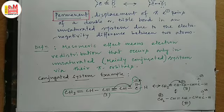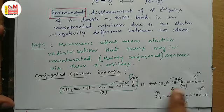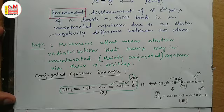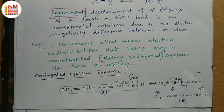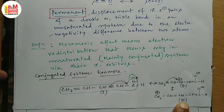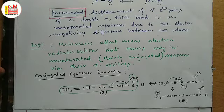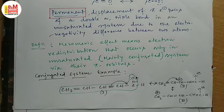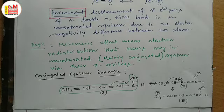Now what is the difference between mesomeric effect and resonance? Here we have drawn the canonical structures of this molecule, which is what we always do in resonance. But in this case we are mainly considering the permanent displacement of pi electron pairs in the individual structure of the molecule. In the case of resonance, we actually deal with the delocalization of pi electrons within the whole system. In resonance we consider the structure of a resonance hybrid which actually exists in reality, but in mesomeric effect we are considering the pi electronic displacement — which is a permanent effect — in individual structural forms of the molecule.